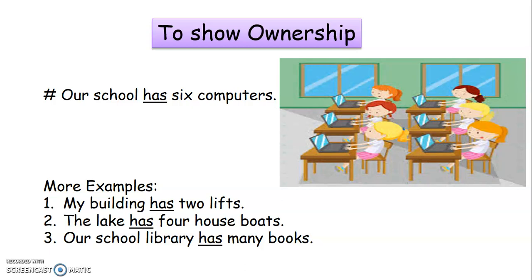Second, 'The lake has four houseboats.' Here, 'lake' is a singular noun, so we make use of the verb 'has'. Has shows what the lake owns, that is four houseboats.